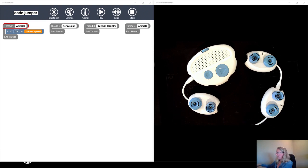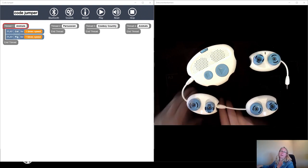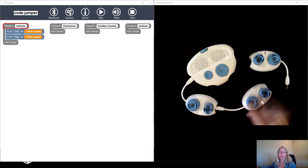Then have them add another play pod to the back of the first play pod. Listen for the click and the line of code automatically appears. This time it just happens to say play pig for one time speed.